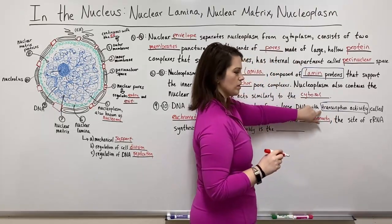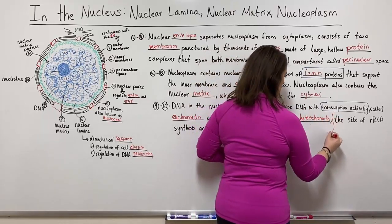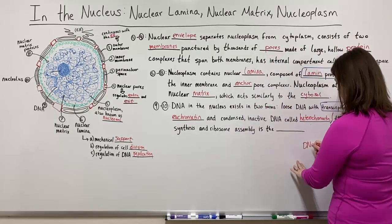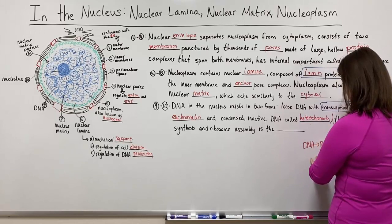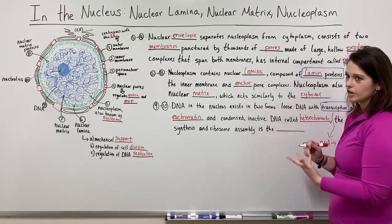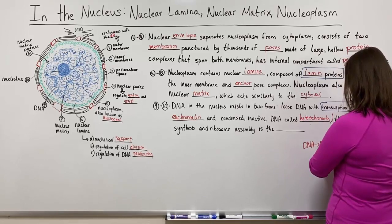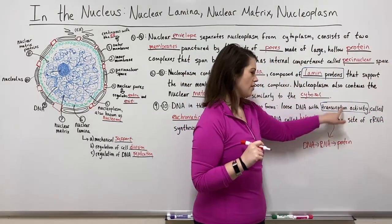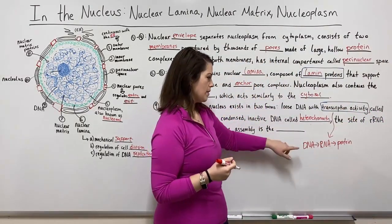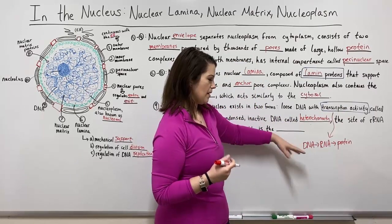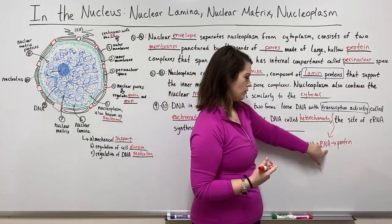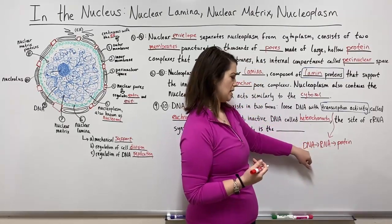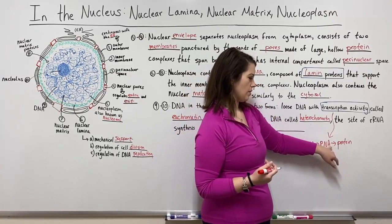When we talk about transcription activity, this involves the central dogma: DNA is used as a template to make RNA, and the particular type of RNA used as a template to make protein is the messenger RNA. The central dogma is the idea that information in the cell flows from DNA through RNA to protein. The two processes that link this are transcription — the making of RNA from the DNA template — and translation — the making of protein from the RNA template.